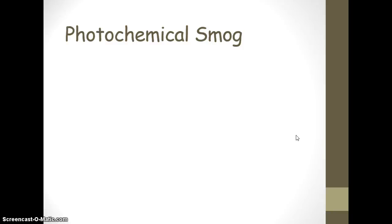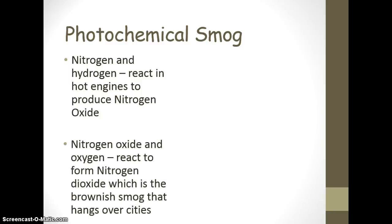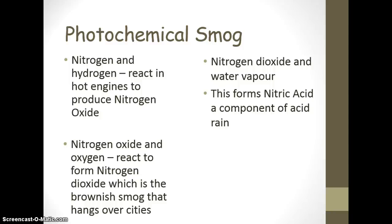Ozone is formed from VOCs and NOx reacting in sunlight, so photochemical smog is mostly made of VOCs and NOx. Inside hot car engines, nitrogen and hydrogen react to produce nitrogen oxide, which then reacts with oxygen to form nitrogen dioxide — a brownish-yellowish smoke that's quite typical when we think about smog.